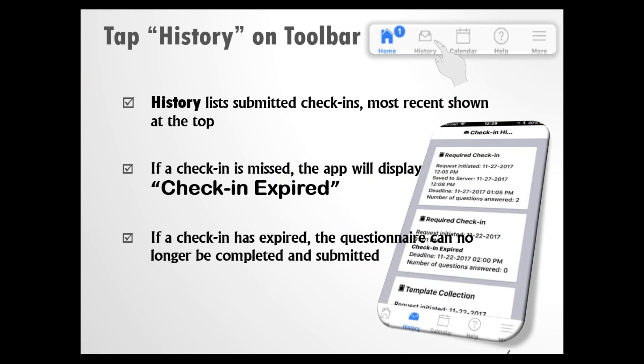When you tap History on the toolbar, that shows you a list of your submitted check-ins with the most recent shown at the top. If it says the check-in has expired, the questionnaire can no longer be completed and submitted. Your supervisor gives you a timeframe to complete the questionnaire, and when it says check-in expired, it means that time is over. It may be a good idea to contact your supervisor and let them know why you missed a check-in so they can send you another one if necessary.